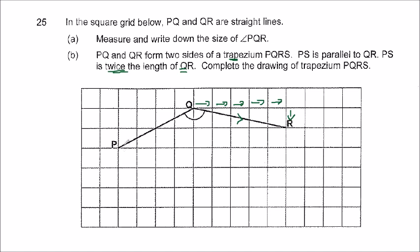So if it's twice, we just have to draw QR two times from P. We can start counting; maybe I can just draw the arrow for you. We have to move to the right one, two, three, four, five. Then after that, I have to go down one unit.